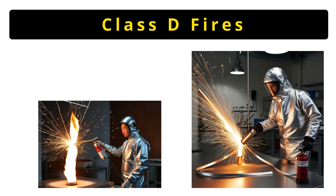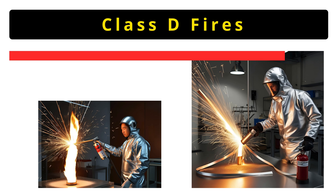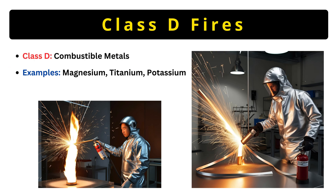Now, let's discuss Class D fires. These are rare but extremely dangerous. They involve combustible metals like magnesium, titanium, or potassium. These metals burn at extremely high temperatures and ordinary extinguishers won't work. Instead, specialized dry powder extinguishers are needed to smother the flames without reacting with the metal.